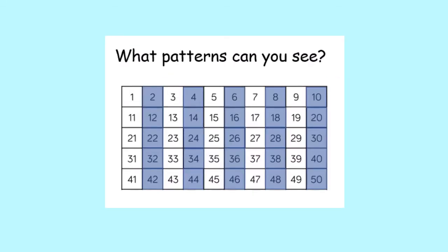Let's count in twos all the way to fifty. Count with me. Two, four, six, eight, ten, twelve, fourteen, sixteen, eighteen, twenty, twenty-two, twenty-four, twenty-six, twenty-eight, thirty, thirty-two, thirty-four, thirty-six, thirty-eight, forty, forty-two, forty-four, forty-six, forty-eight, fifty. What do you notice about the pattern? Yes, that's right. It goes white, blue, white, blue, white, blue.